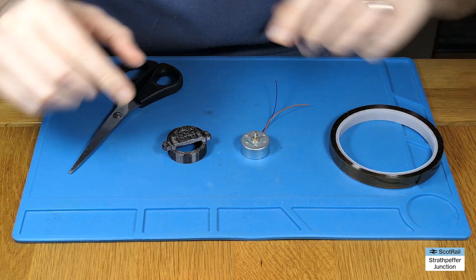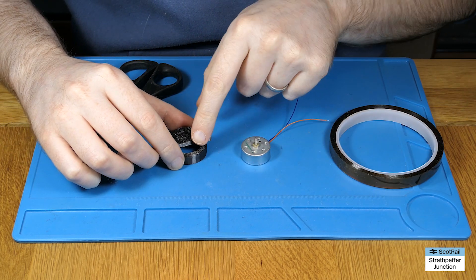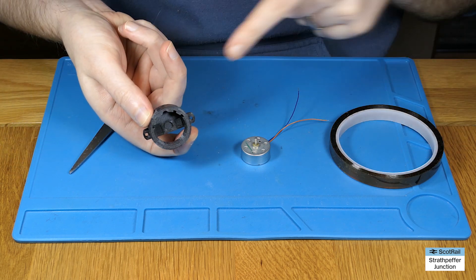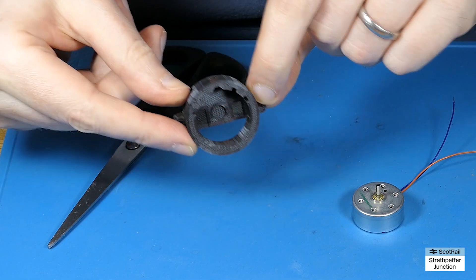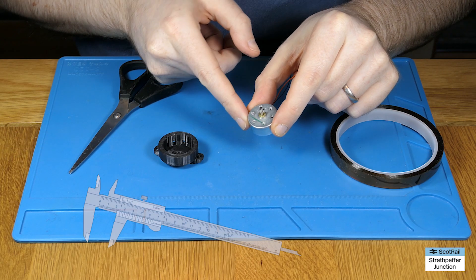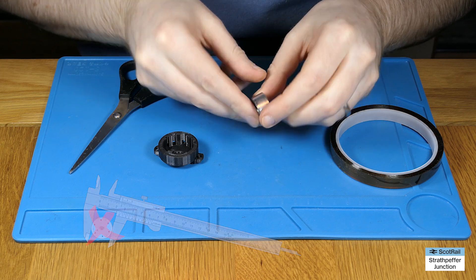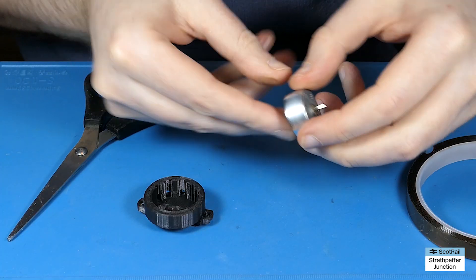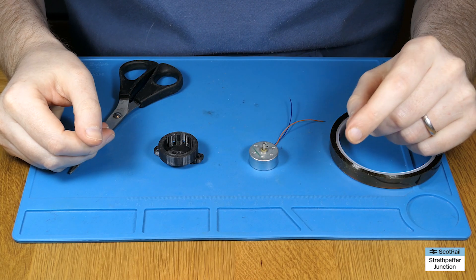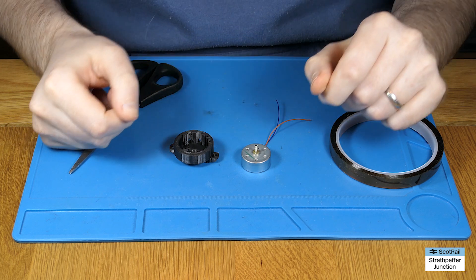Now one of the issues with these adapters is that sometimes the motor can be just very slightly loose inside, and that's because the manufacturing tolerances of these can sometimes vary between batches or prints and similarly the manufacturing tolerances of the little can motors can vary too. These are created by pressing sheet metal and sometimes it's just a fraction of a millimetre different and when you marry the two up it means that they can be a little bit loose.